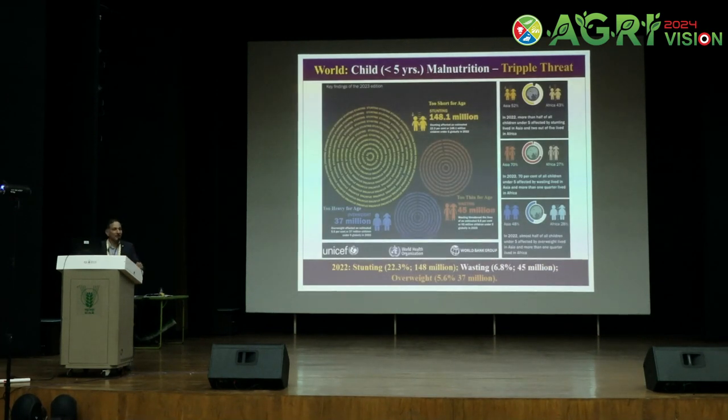We are also threatened by malnutrition. Having food is one thing, but the nutritional component is very important — what I call a triple threat. About 148 million children under age five are stunted — too short for their age. 45 million are wasted — too thin for their age. And 37 million are obese — too heavy for their age. On top of that, two billion people are malnourished in terms of micronutrient deficiencies like zinc and iron. That is also unacceptable.